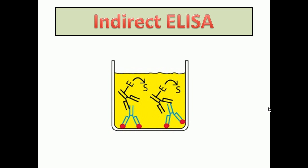This process is called indirect ELISA because the primary antibody we use is not enzyme-linked — only the secondary antibody is enzyme-linked. The enzyme-substrate reaction is not direct, meaning the first antibody we use is not attached to the enzyme. If the first antibody were attached to the enzyme, it would be called direct ELISA. Since this process uses two different antibodies and the second one is enzyme-linked, it is termed indirect ELISA — because the enzyme-substrate reaction occurs via the primary antibody.